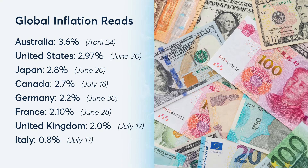Currently, inflation in Australia is higher than most of the developed world, with the latest CPI reading at 3.6%. The next look at Australian CPI comes on July 30th.